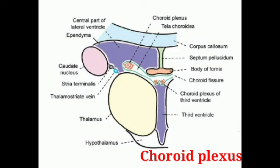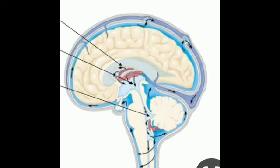The choroid plexus consists of vascular plexuses covered by ependyma and pia mater, and is the source of CSF. The choroid plexus of the third ventricle is supplied by the posterior choroidal branches of the posterior cerebral artery.